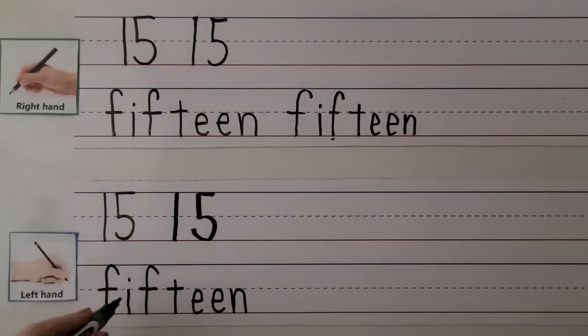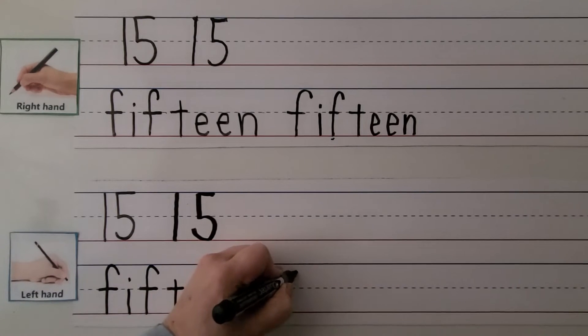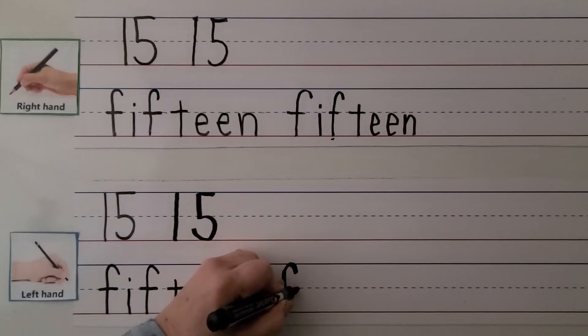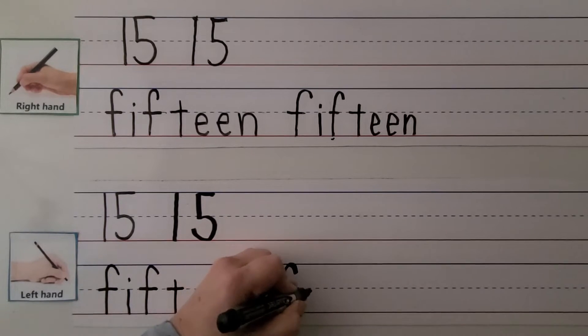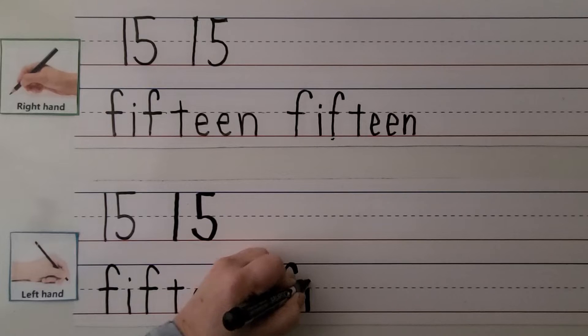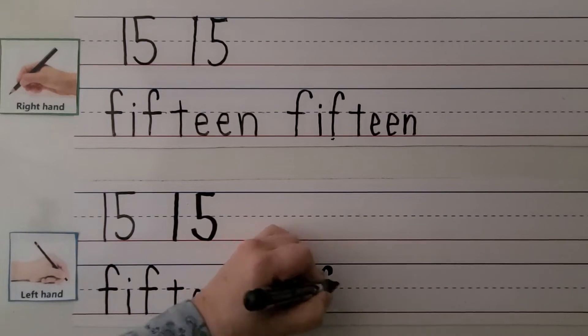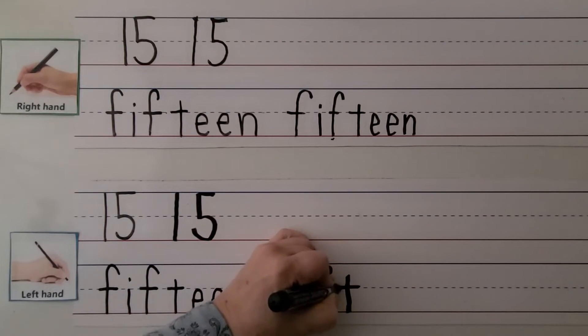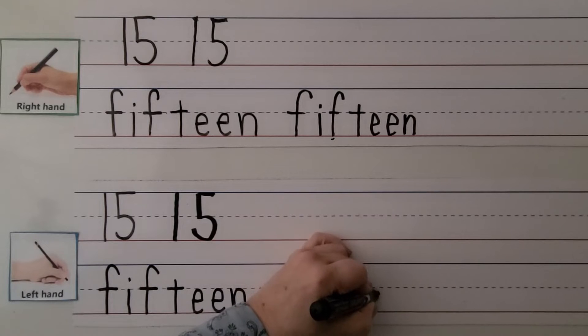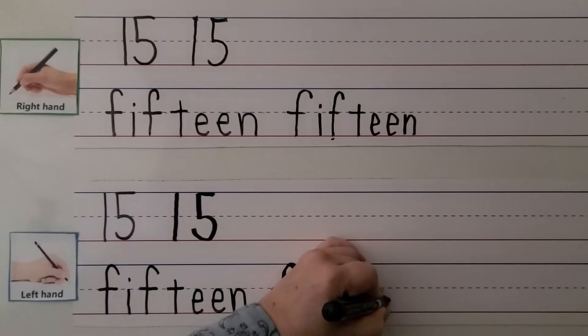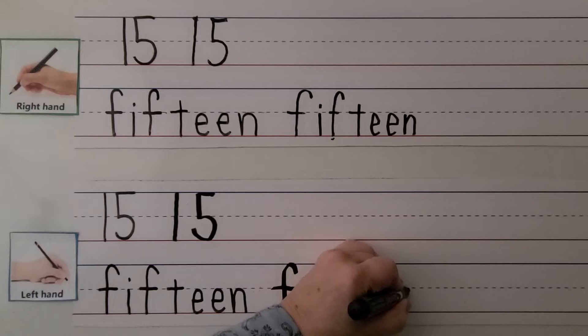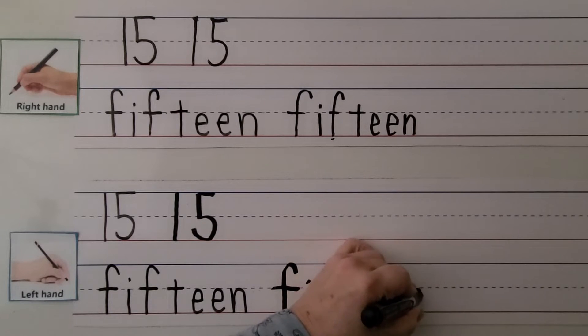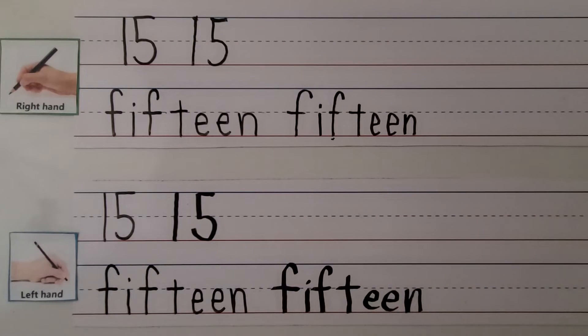We can write fifteen. F, I, F, T, E, E, N. We start here. We make our F. We go over here and pull it towards our hand. We make our I. We make another F. Pull it towards our hand. We make our T. Cross it by pulling it towards our hand. We make our E. Across, up, and around. We make our N. Down and bounce around to the bottom line. Fifteen.